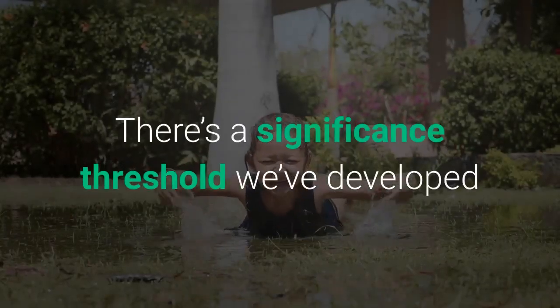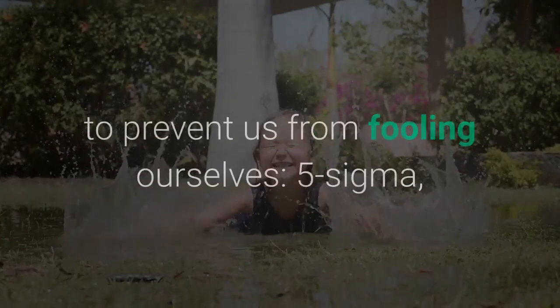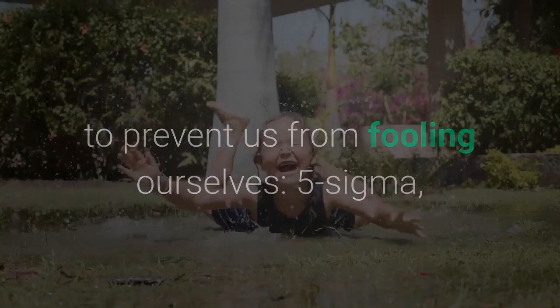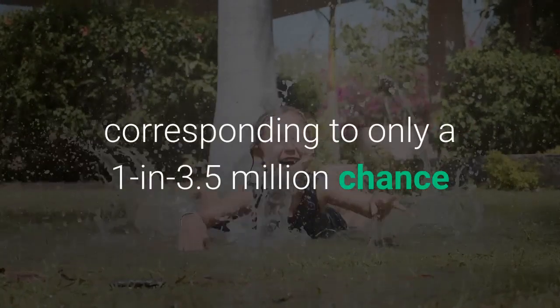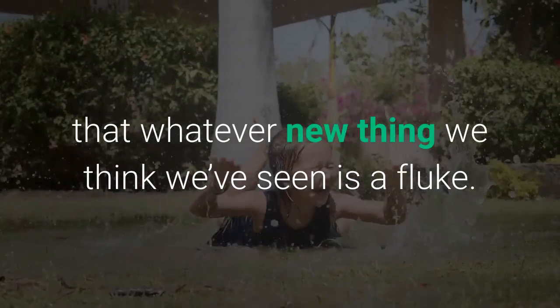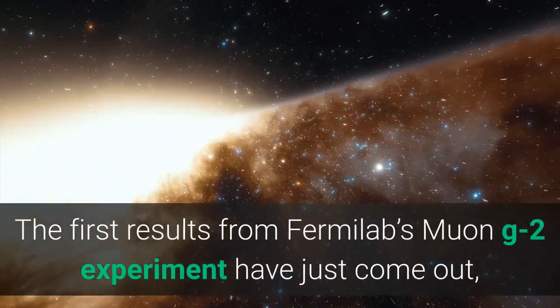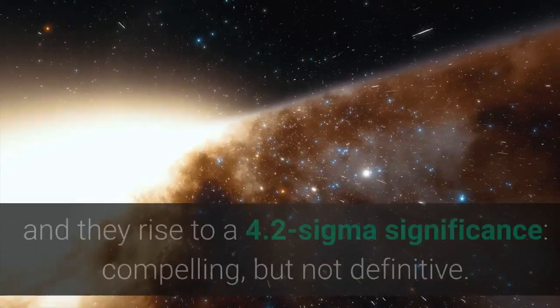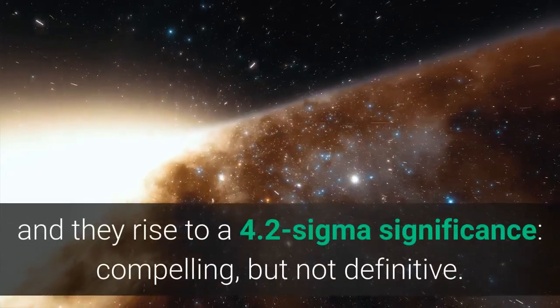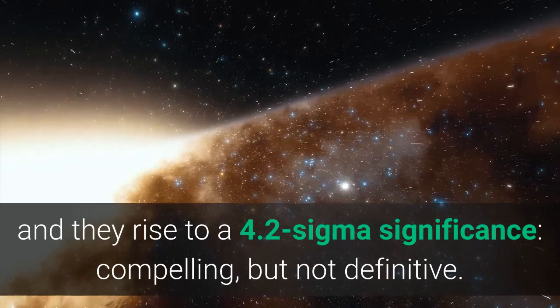There's a significance threshold we've developed to prevent us from fooling ourselves. Five sigma, corresponding to only a 1 in 3.5 million chance that whatever new thing we think we've seen is a fluke. The first results from Fermilab's muon G-2 experiment have just come out, and they rise to a 4.2 sigma significance, compelling, but not definitive.